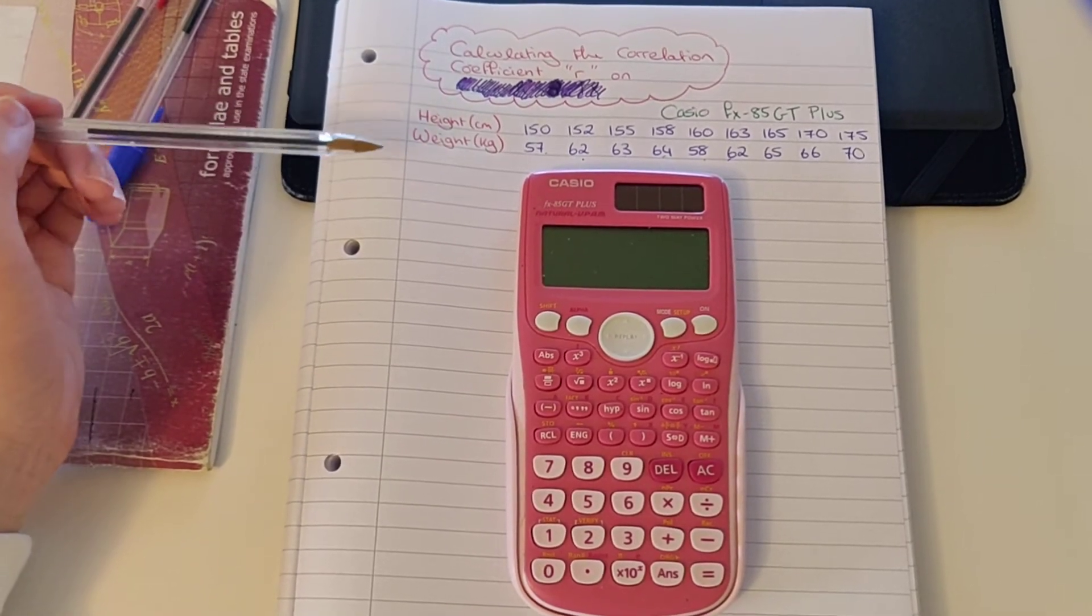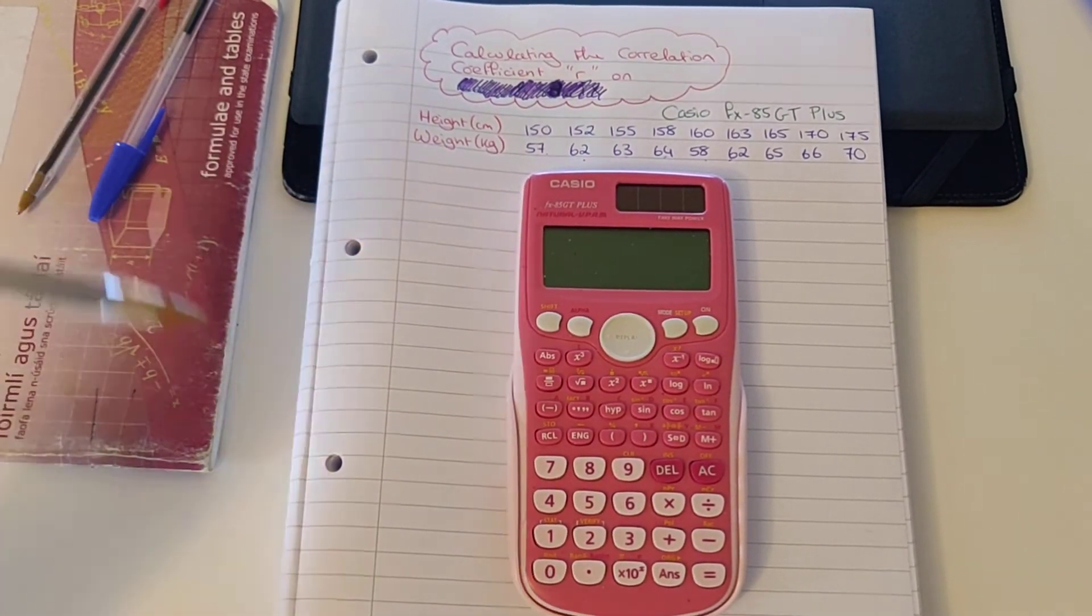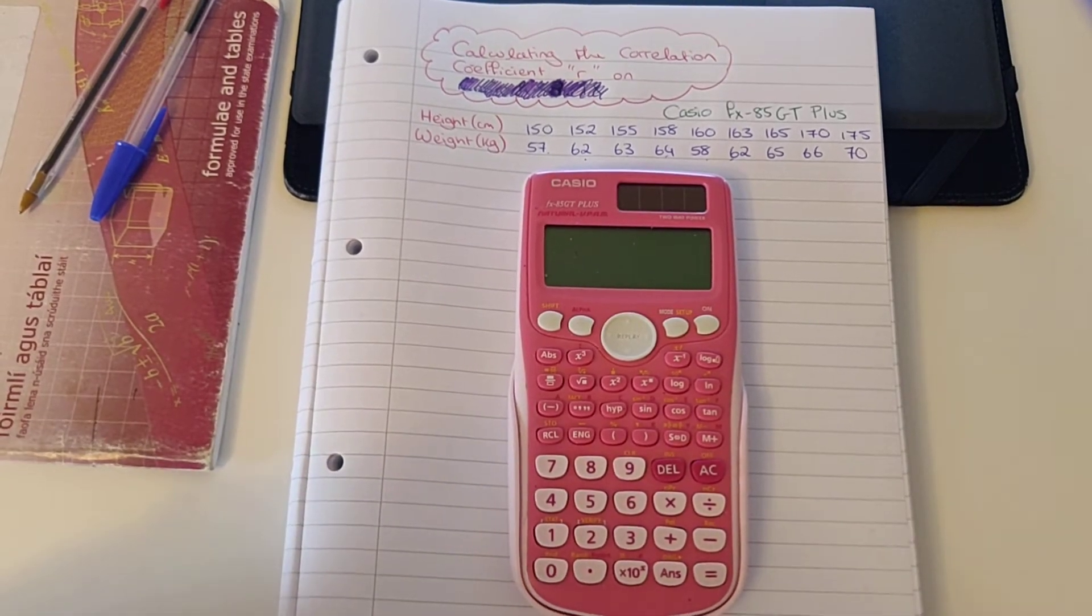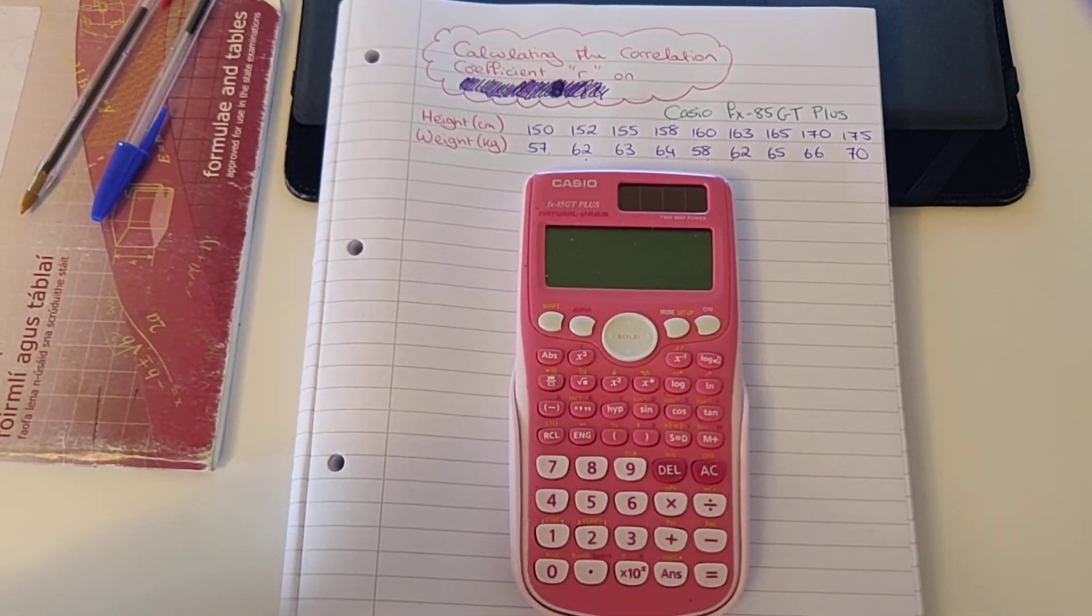So what we're going to do today is find our correlation coefficient to see whether we describe the correlation as positive, negative, strong or weak.